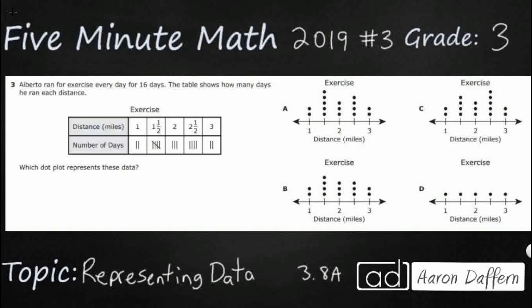So we have Alberto, he is running exercise for 16 days. The table shows how many days he ran each distance and we have some tally marks here, we have some distance and then we need to represent that with a dot plot and sometimes these dot plots are also called line plots. You might see both.